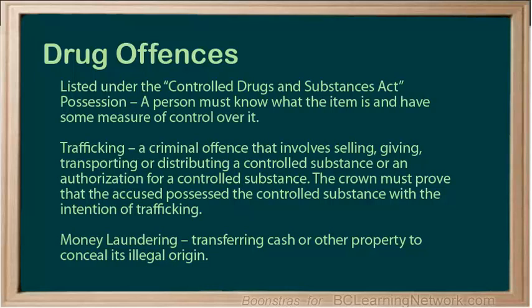Trafficking is a criminal offence that involves selling, giving, transporting, or distributing a controlled substance, or an authorization for a controlled substance. The Crown must prove that the accused possessed the controlled substance with the intention of trafficking. Money laundering is transferring cash or other property to conceal its illegal origin.